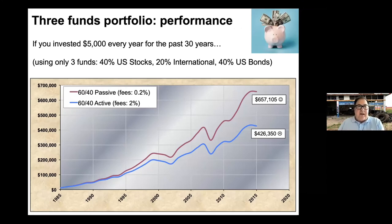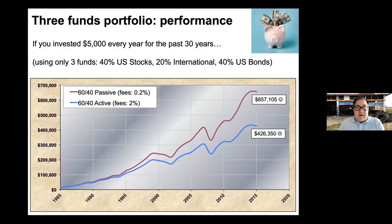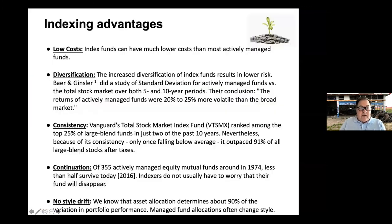Focusing on three-fund portfolio performance: if you invested $5,000 every year for 30 years from 1985 to 2015 using passive funds at 0.20% (20 basis points) cost, you'd have $657,000. Active funds cost about 10 times that. If you paid an assets-under-management fee of one or two percent, you'd make considerably less over a 30-year period.